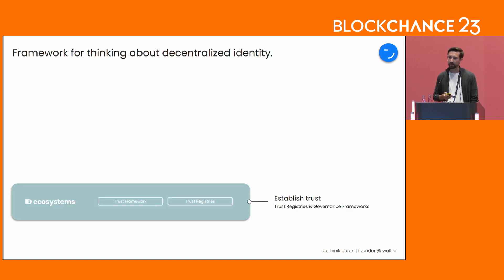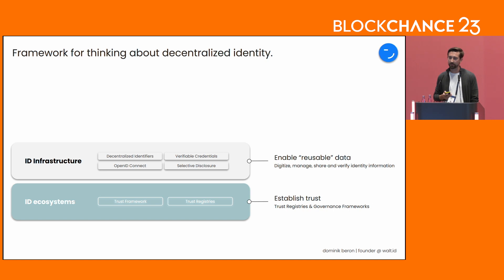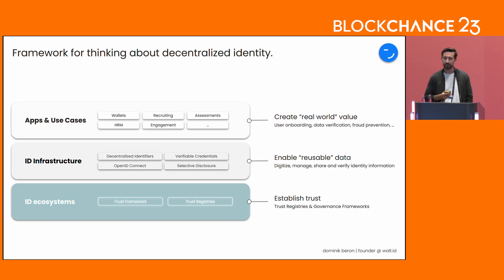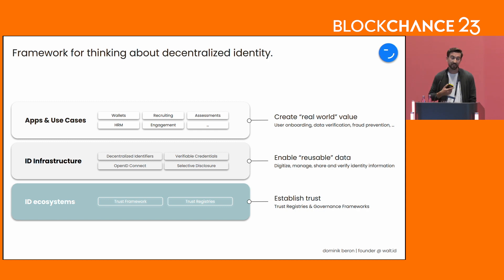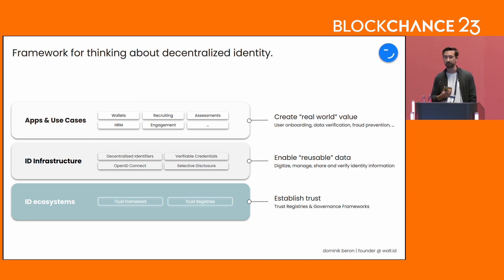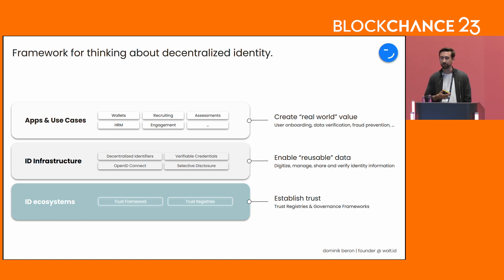A nice framework for thinking about decentralized identity is to think about it in three different layers. The bottom layer being the identity ecosystems — the blockchains that establish trust registries and trust frameworks — so this is all about governance. Then we have identity infrastructure that makes it very easy for companies in different verticals to launch applications and use cases that create real-world value, like banks launching identity wallets, recruiting tools or assessment tools, HRM engagement tools, and all these kinds of things.